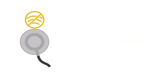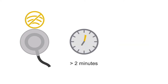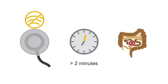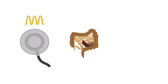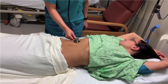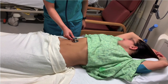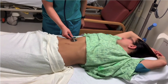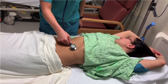Absence of bowel sounds for greater than 2 minutes of listening may indicate no peristalsis, which usually implies an ileus. Very high-pitched bowel sounds can be associated with a mechanical obstruction, such as a small bowel obstruction, which increases the volume and frequency of bowel sounds. Here is a demonstration of auscultation of all four quadrants — listen for at least 5 to 10 seconds in each quadrant.